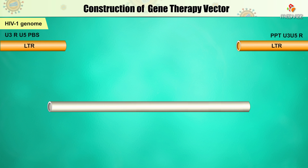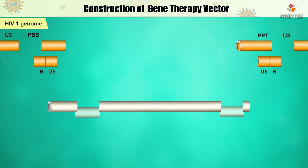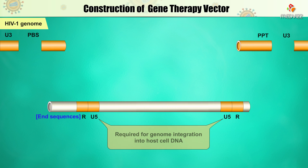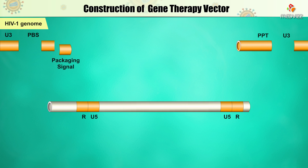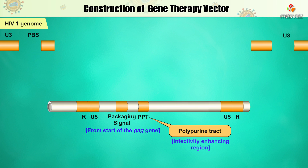From what is left of the HIV genome, the new gene therapy vector takes the long terminal repeat (LTR) and sequences from R to U5, which are required for genome integration into host cell DNA. The vector also uses a packaging signal from the start of the gag gene and a region called the infectivity-enhancing polypurine tract (PPT).